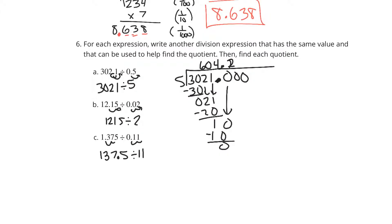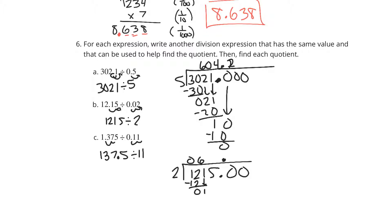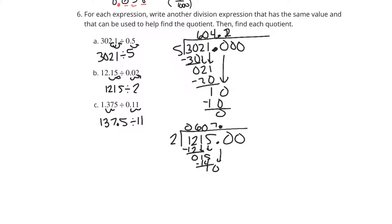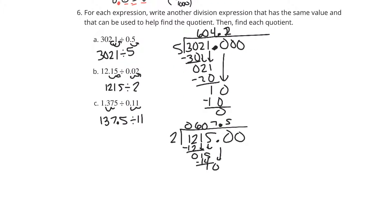For 1,215 divided by 2: place a decimal and zeros. It doesn't go into 1; it goes into 12 six times. Drop down the 1 — 2 doesn't go into 1, put a 0. Bring down the 5 — 2 goes into 15 about 7 times. Subtract 14, get 1; bring down a 0 — 2 goes into 10 five times, subtract 10, get 0. So 607 and 5 tenths.